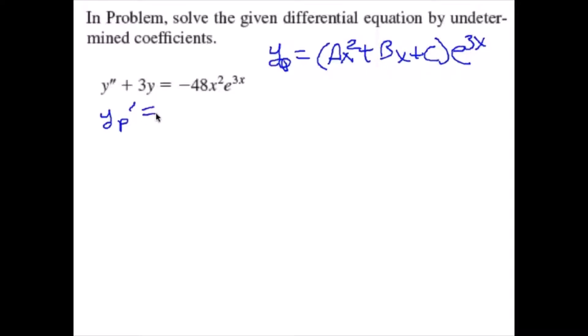yp prime will therefore come out to 3Ax squared plus (2A plus 3B) times x plus B plus 3C times e to the 3x.